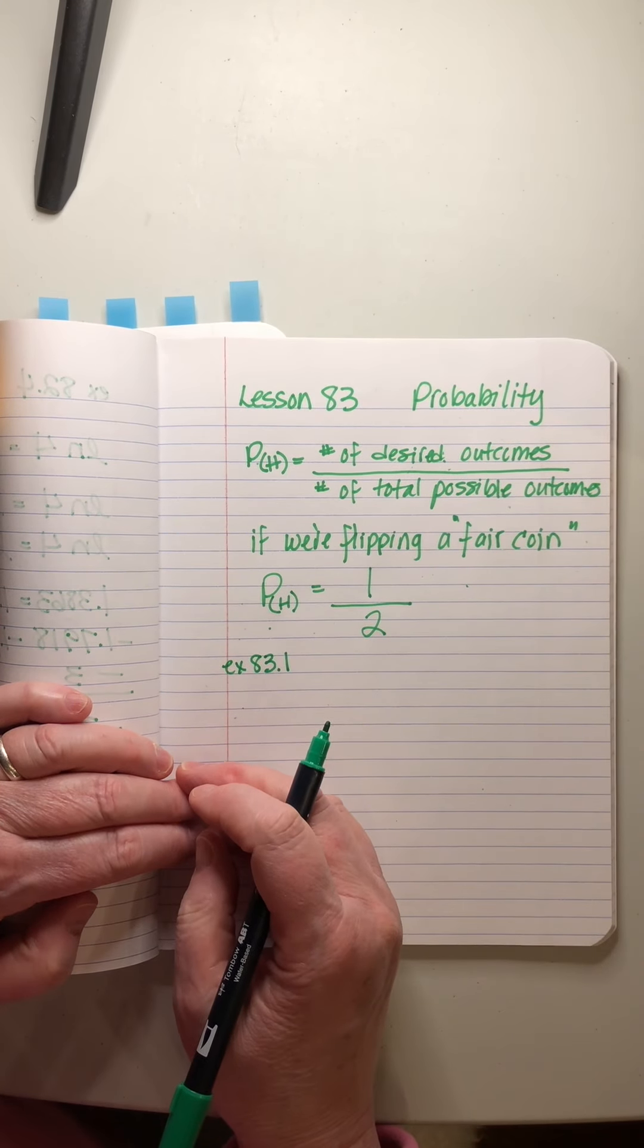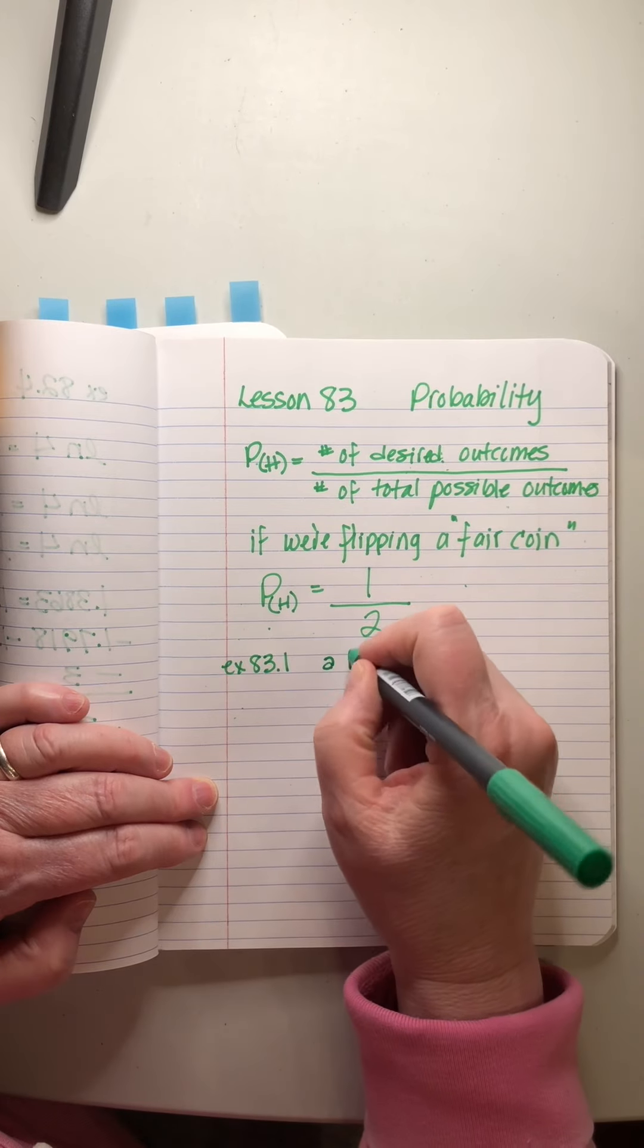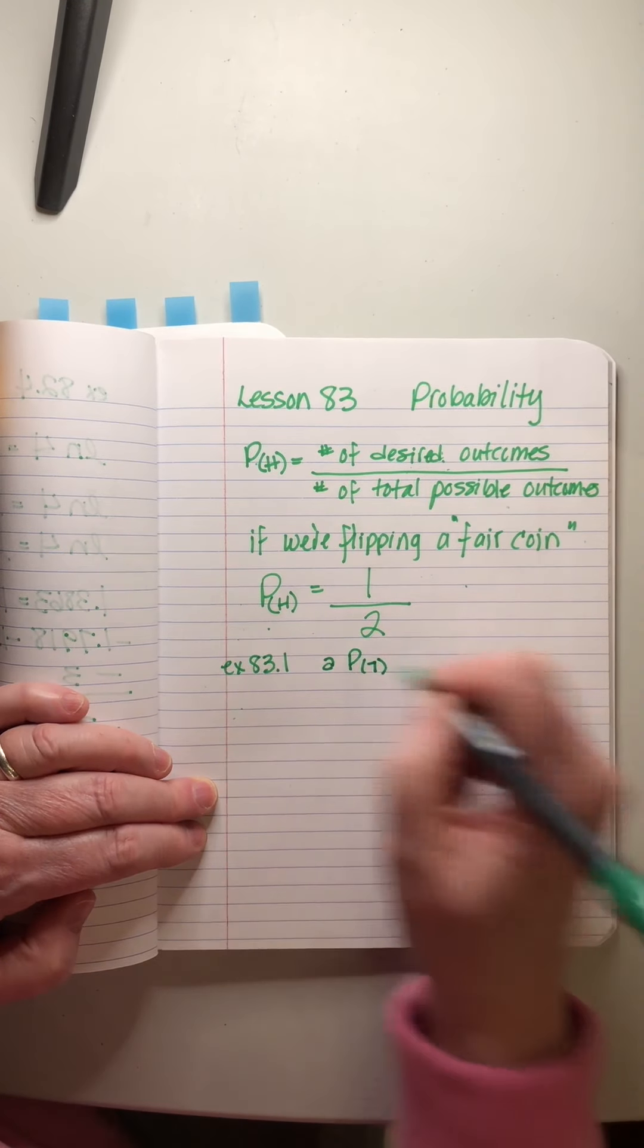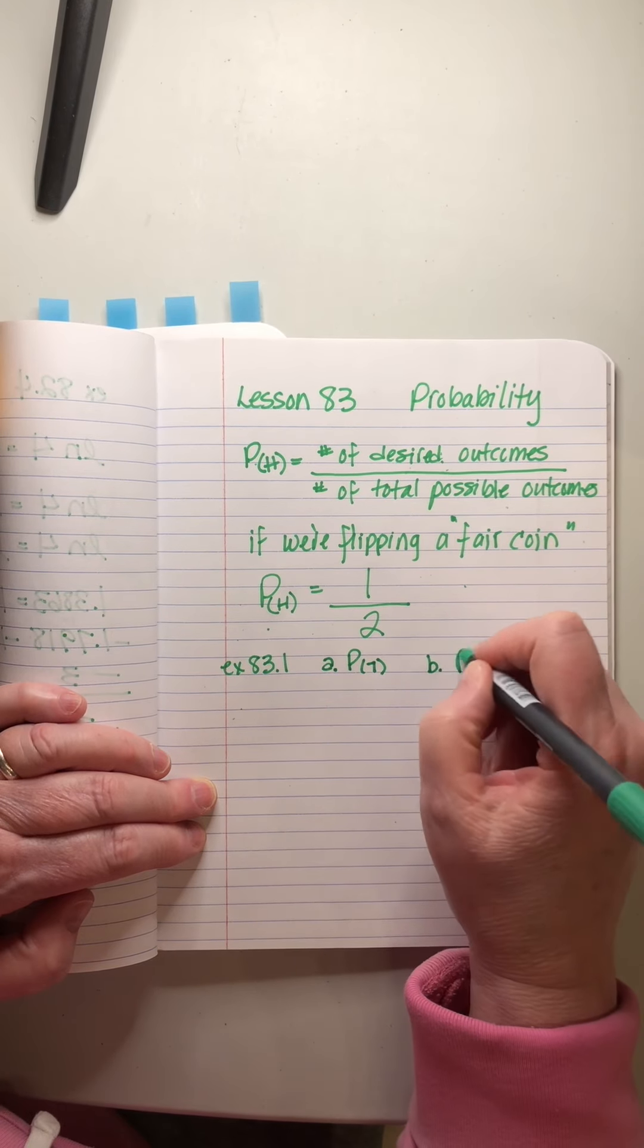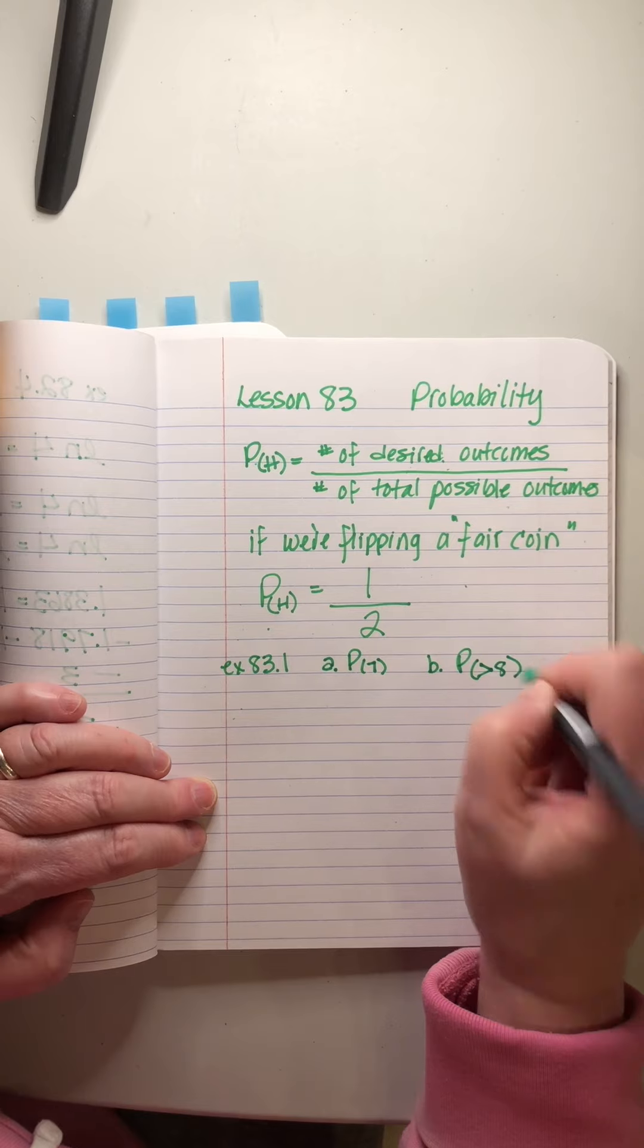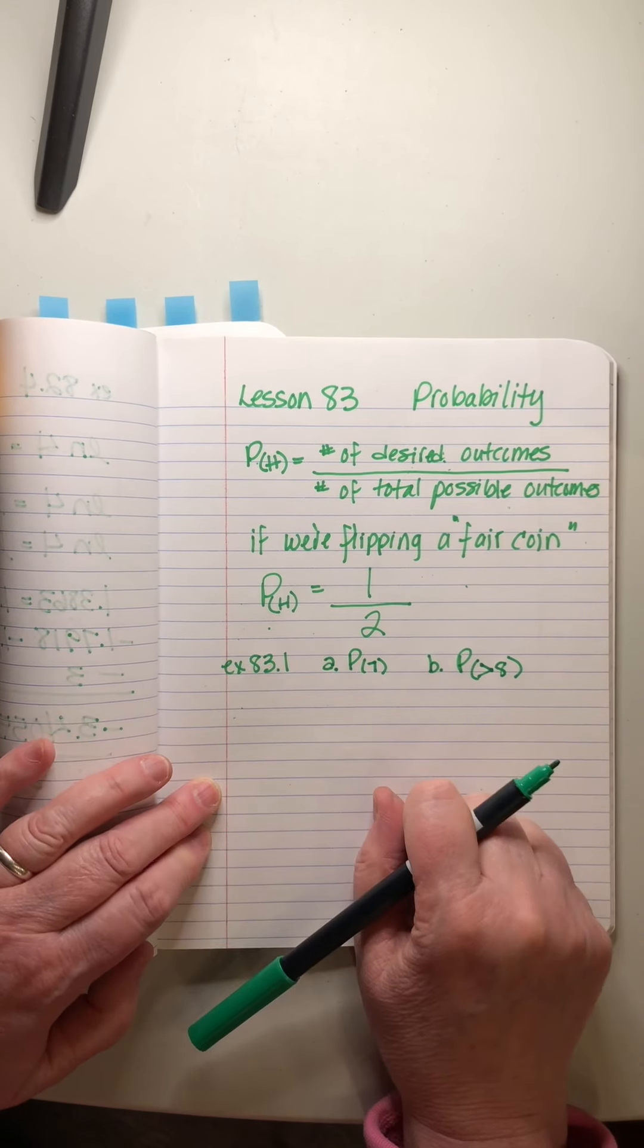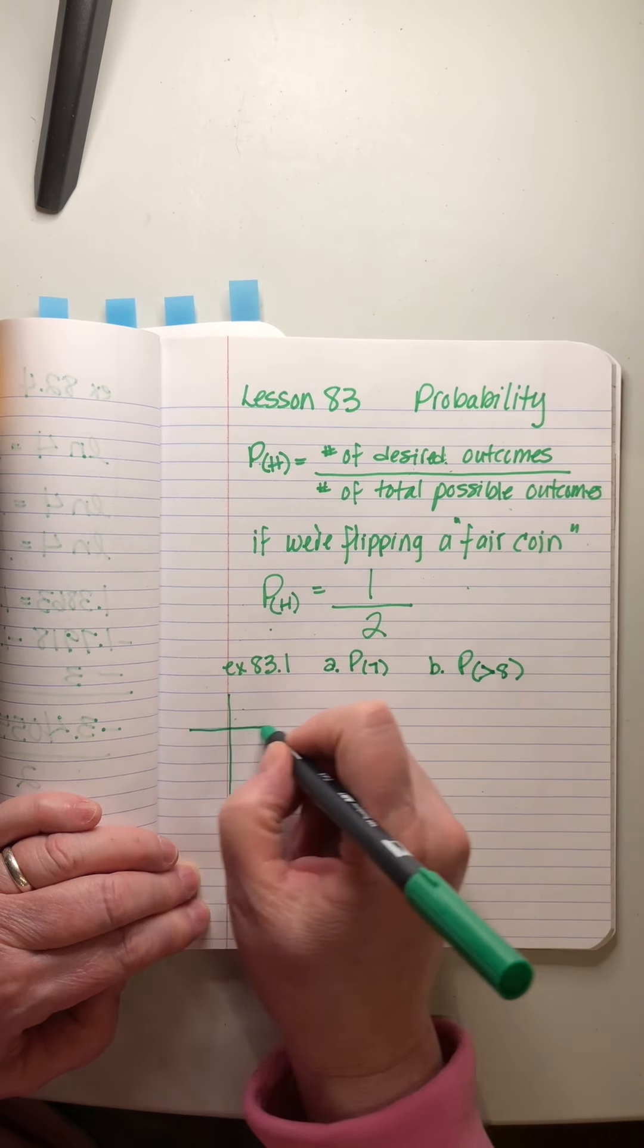Now let's try this problem: two fair dice are rolled. Again, they're not cheating dice. What is the probability of getting a, rolling a seven? And b, what's the probability of rolling a number greater than eight?